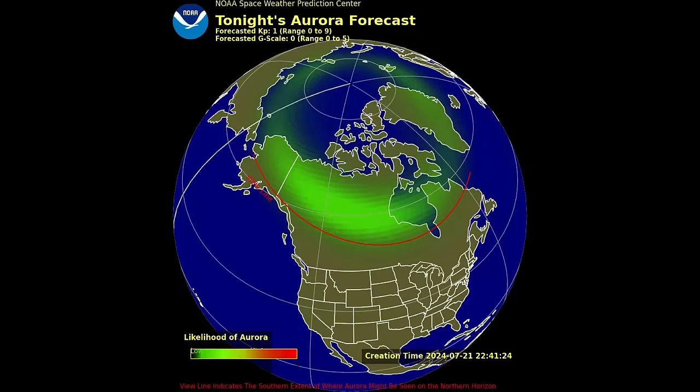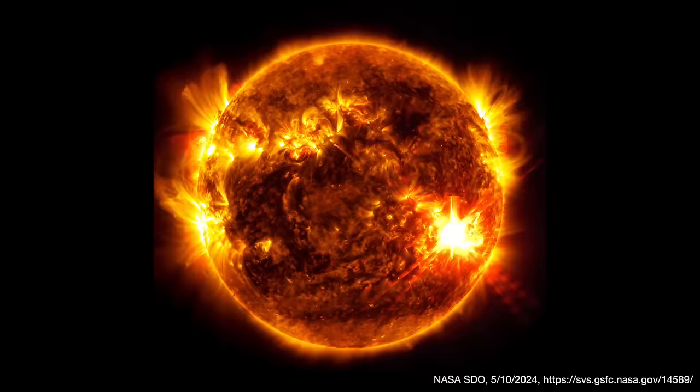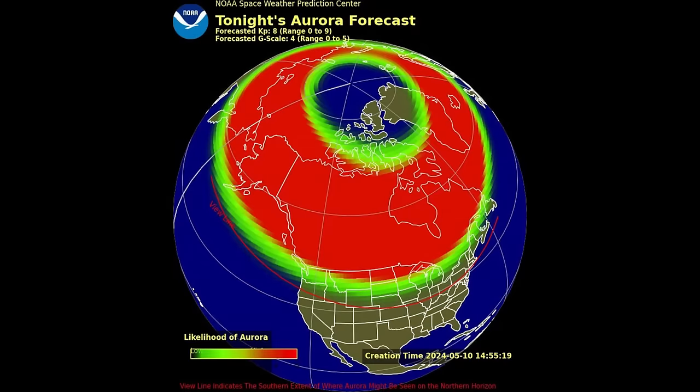While the northern lights are usually visible only in places like Alaska or Iceland, solar flares like this can cause stronger auroras. This was the aurora forecast for May 10, 2024, the strongest solar storm in decades. And I took the following photos in Seattle.